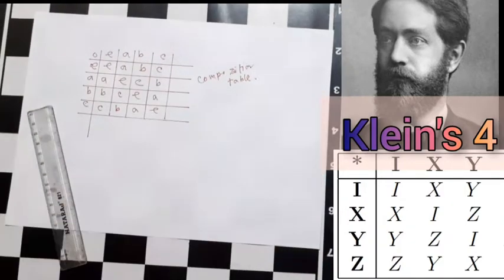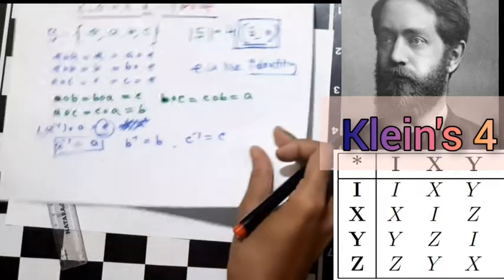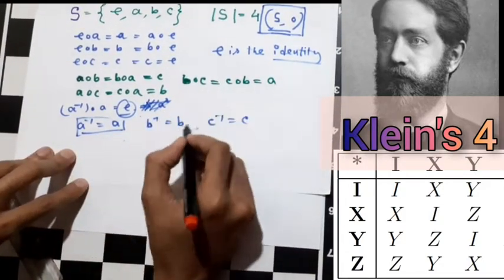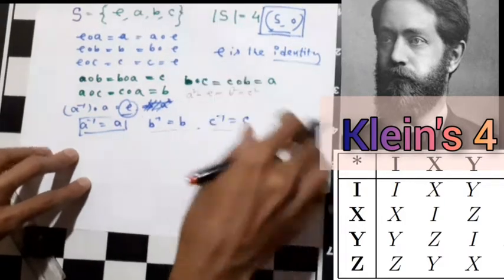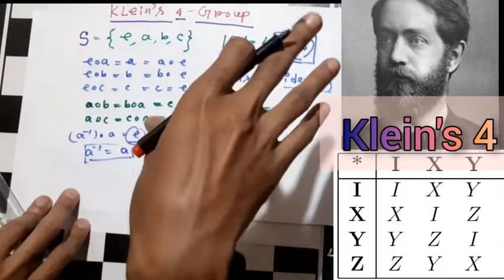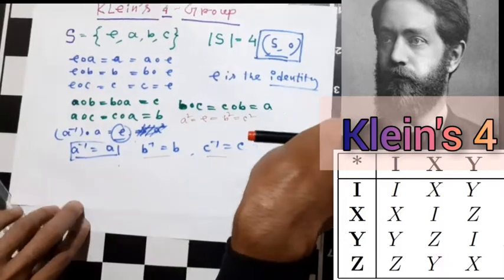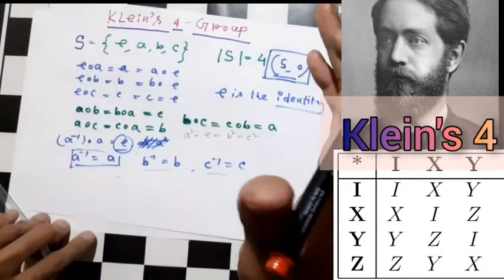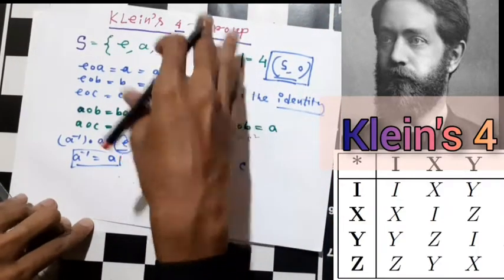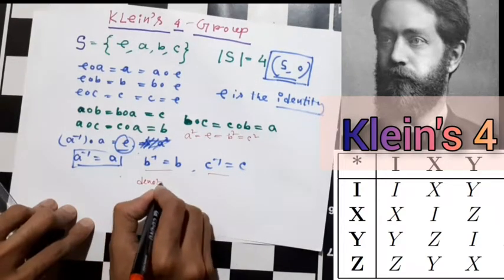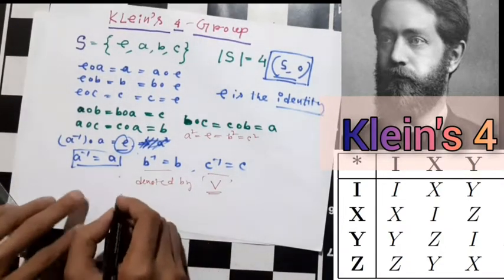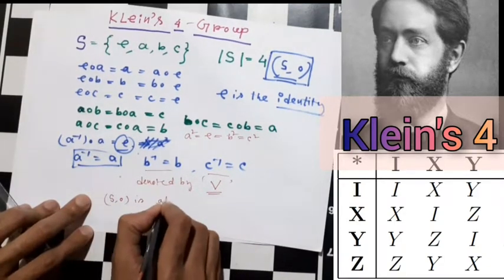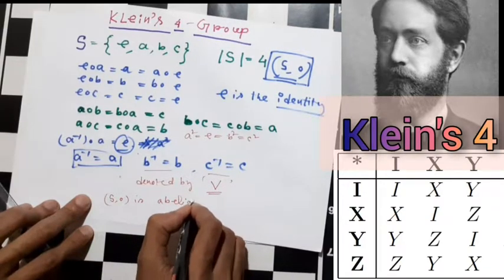This is the composition table. An important postulate here is that a squared equals e, b squared equals e, and c squared equals e. This construction forms a beautiful group. The group is commutative — it is Abelian — but it is not a cyclic group. This is the Klein Four-Group, and it is denoted by V.